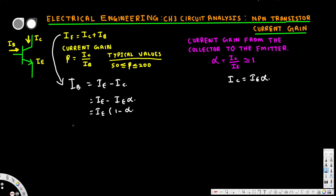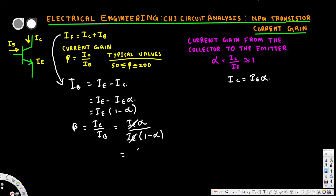We know that beta is equal to IC over IB, and IC is equal to IE times alpha. We derived that IB is equal to IE times (1 minus alpha). Substituting these in, the IE terms cancel, and we end up with beta equal to alpha over (1 minus alpha).